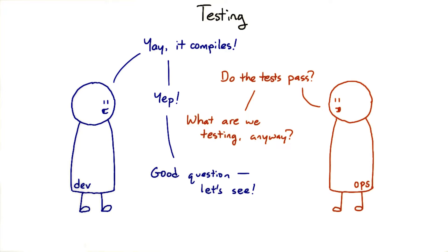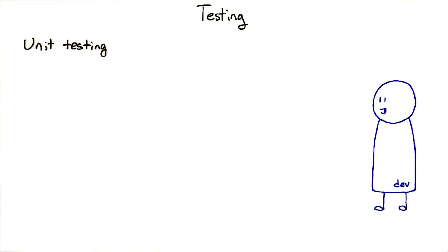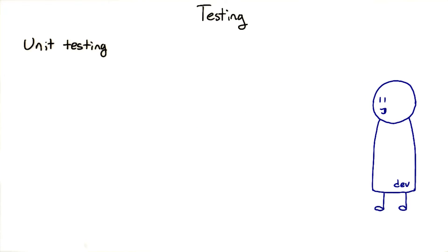Testing is a huge subject, and we actually have a whole course on it. But let's take a quick look at some different kinds of tests. Unit tests are tests the developers write alongside the application code. Each test checks the behavior of one specific unit of code, like a function or class. They're designed to be automated — developers will run them repeatedly as part of the development process.